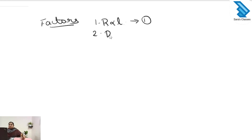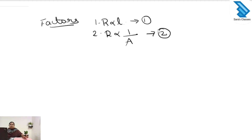The second factor is the area of cross section. Resistance and area of cross section are inversely proportional. Area of cross section means the thickness of the wire. When the area of cross section increases, the resistance will decrease.